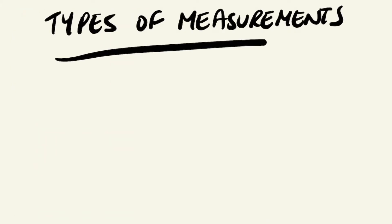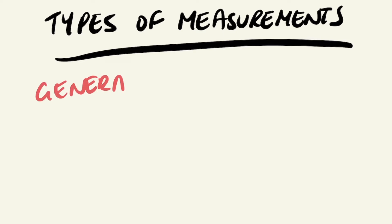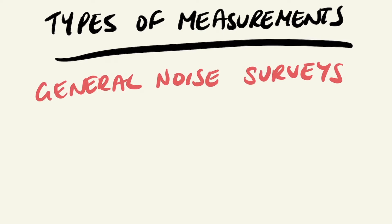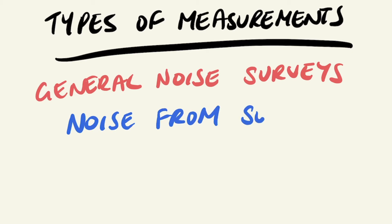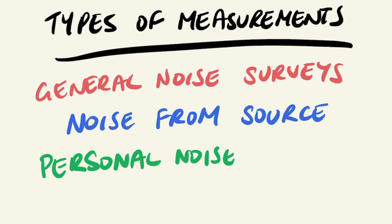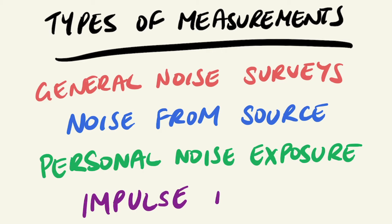The types of measurements that can be performed include a general noise survey, usually following a grid pattern, which produces a noise map of the workplace. Noise level from the source is usually measured 1 to 3 meters from the source. Personal noise exposure of the worker is usually measured via a dosimeter, which is able to calculate an equivalent sound level over an 8-hour TWA. Finally, impulse noise — noise that occurs with a sudden burst of high intensity sound caused by the impact of two solids hitting each other, for example a hammer strike — is usually measured with a dosimeter.